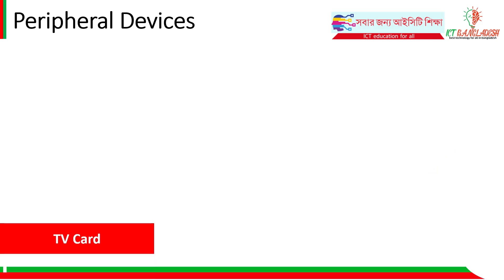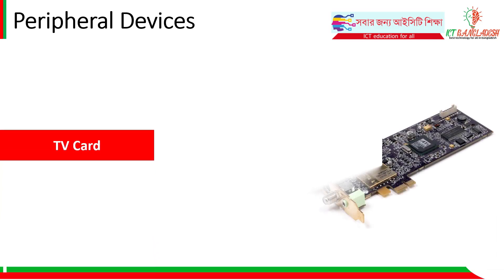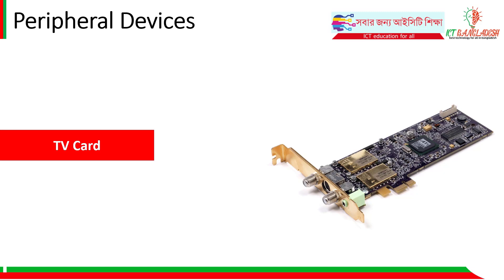A TV card is another internal device. It allows you to watch TV on your computer — so your PC can act like a TV. You can connect a TV cable to your computer and view TV content directly on your monitor through the TV card.